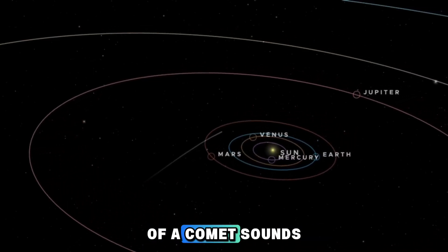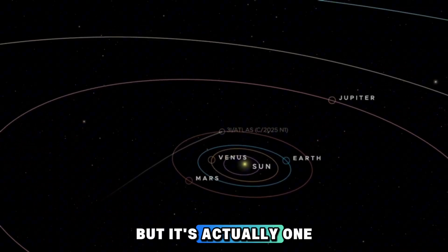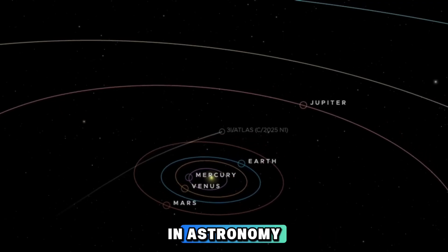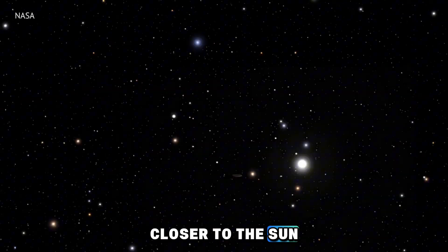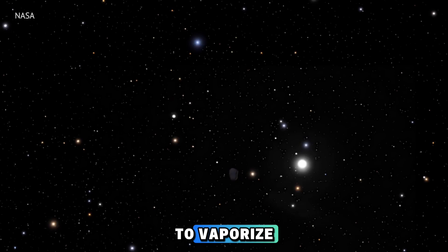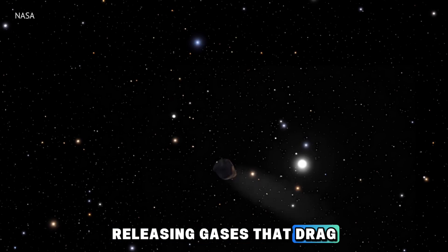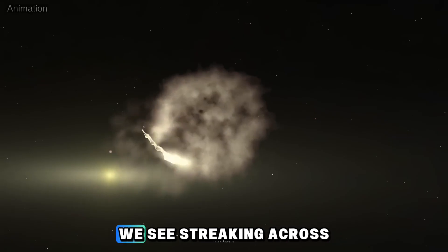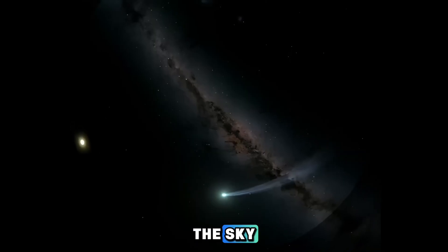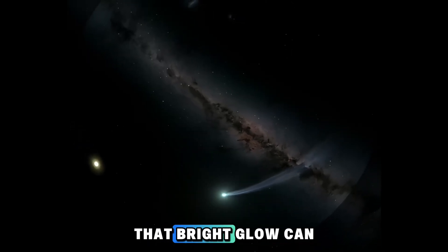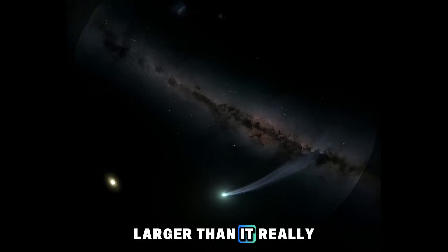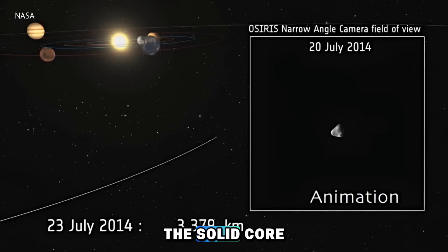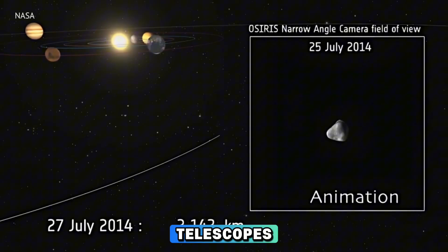Measuring the true size of a comet sounds easy, but it's actually one of the hardest challenges in astronomy. When a comet moves closer to the sun, its icy surface begins to vaporize, releasing gases that drag clouds of dust along with it, creating that glowing tail we see streaking across the sky. But here's the catch, that bright glow can make it look way larger than it really is. The hazy coma surrounding the solid core tricks even the sharpest telescopes.